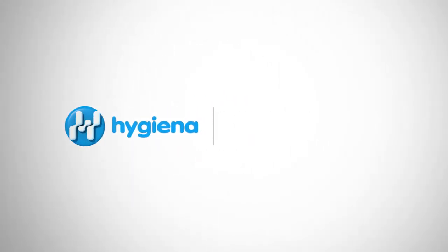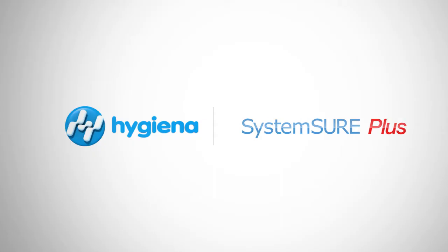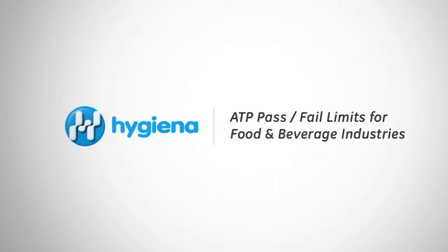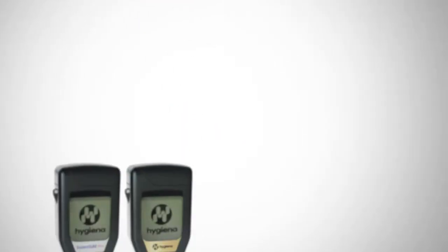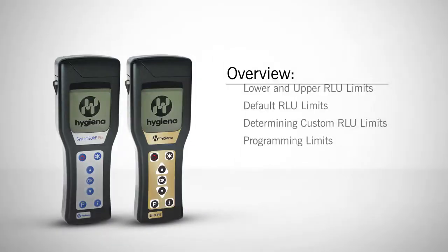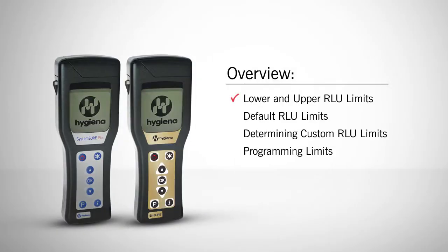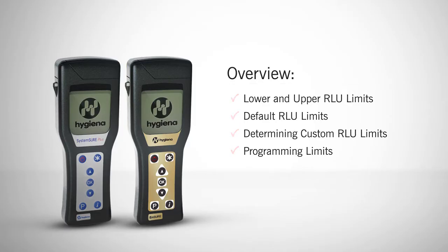Welcome to the Ensure and SystemSure Plus tutorial for setting ATP pass-fail limits for the food and beverage industries. In this video we will cover lower and upper RLU limits, default limits on your systems, how to determine custom limits, and how to program those limits. Let's get started.